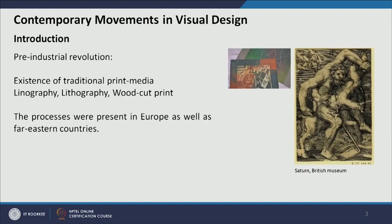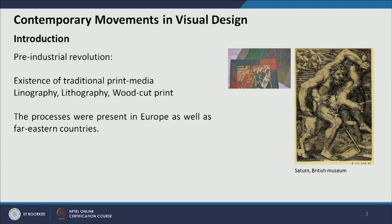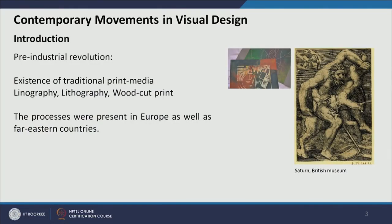There was also traditional print media — for example, lithography and woodcut print. They used to cut a wood block, stone block, or use metal etching to create a master print block, apply colour, and press onto paper or canvas to generate the motif. This process existed not only in Europe but also in Far Eastern Japanese and Chinese art — Japanese and Chinese woodcut prints existed long before the industrial revolution.